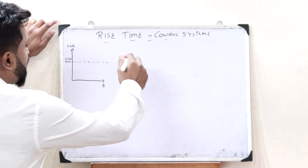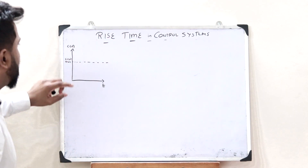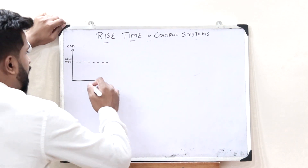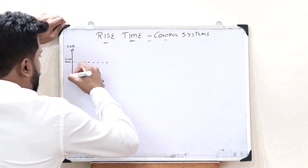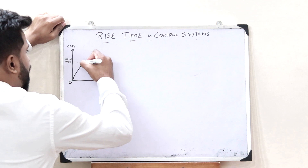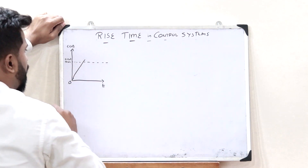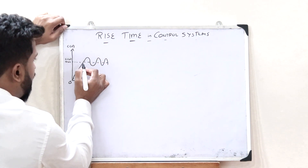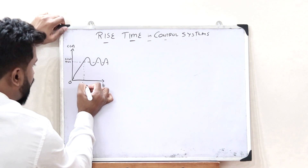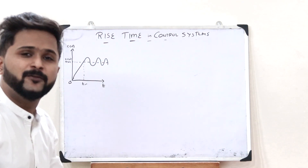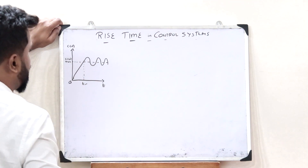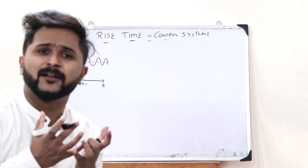The first time domain specification — let us see what is referred to as the rise time of a particular control system. Rise time is the amount of time taken by a control system to reach from 0% to 100% of its value. Here, this amount of time is simply what is referred to as the rise time. This is the case of an underdamped control system.